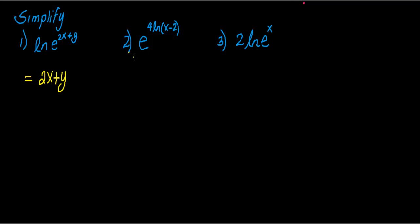For example 2, I have a base e raised to a logarithm. And in our previous example, we talked about the inverse property of exponents. This is a case where we can use that property. We said that whenever you see a number in front of a log, we know that this number was previously an exponent. So I can rewrite this as e to the natural log of x minus 2 raised to the 4th power.